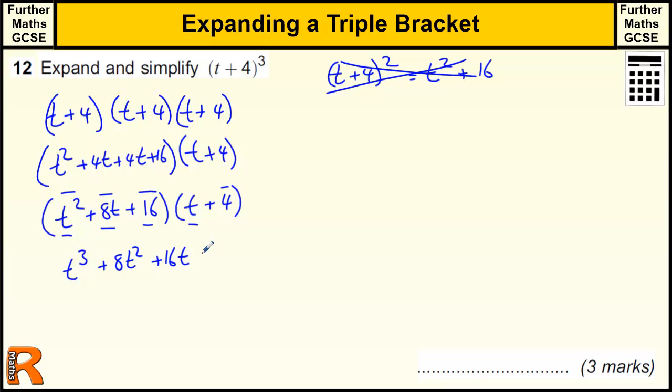So we've got t squared times 4 which is 4t squared, 8t times 4 which is 32t, and 16 times 4 which is 64.